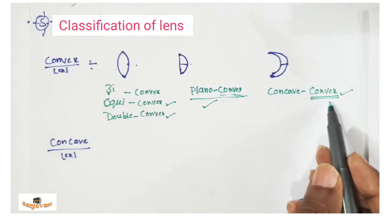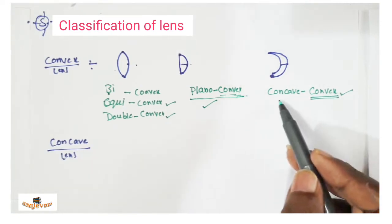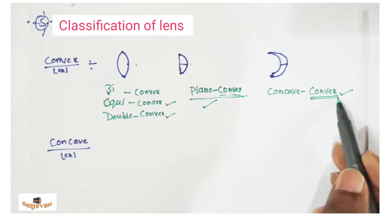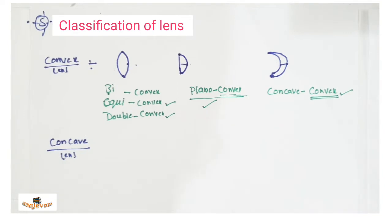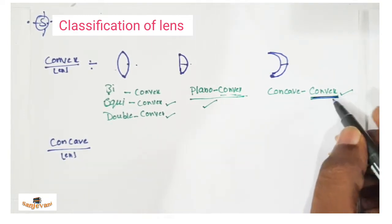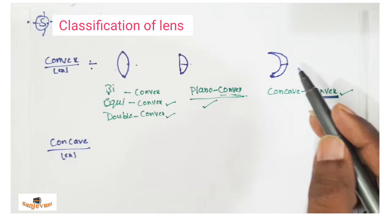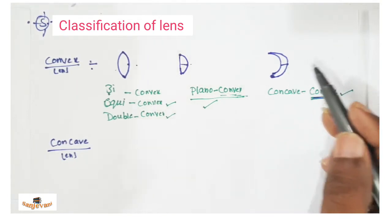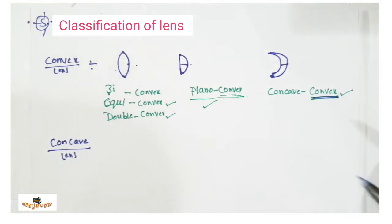The second name, whatever you write, shows the property of the lens. So for this lens, you must write concave-convex — not convex-concave — because the last name convex tells us it behaves as a converging lens.